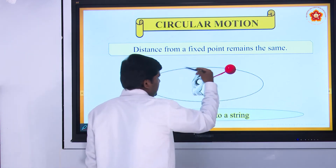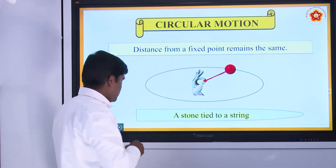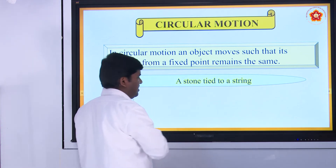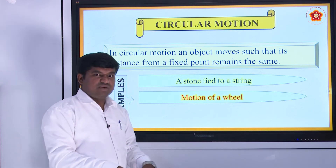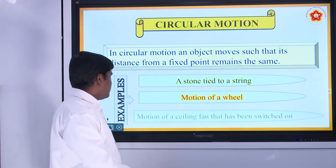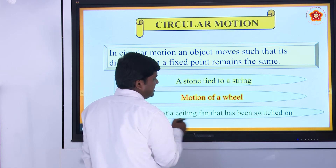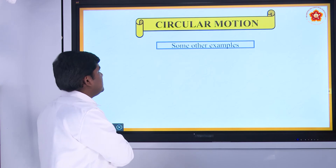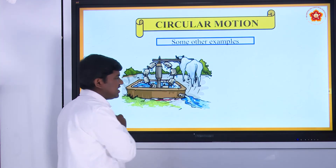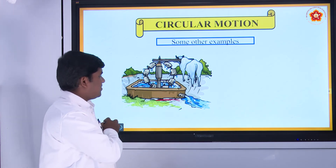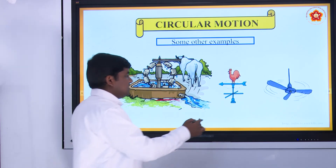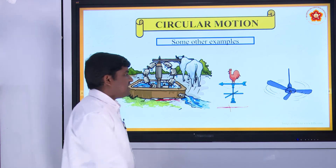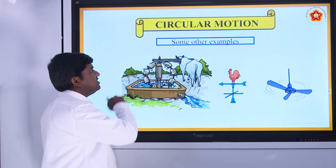From any point, the distance between the stone and your hand remains the same. See some examples for circular motion: a stone tied to a string, motion of a wheel — you can see a motorcycle wheel, that is in circular motion. Next, motion of a ceiling fan that has been switched on — that is also circular motion. A compass used in ancient times to know directions at sea, and ceiling fans — these are all examples of circular motion.